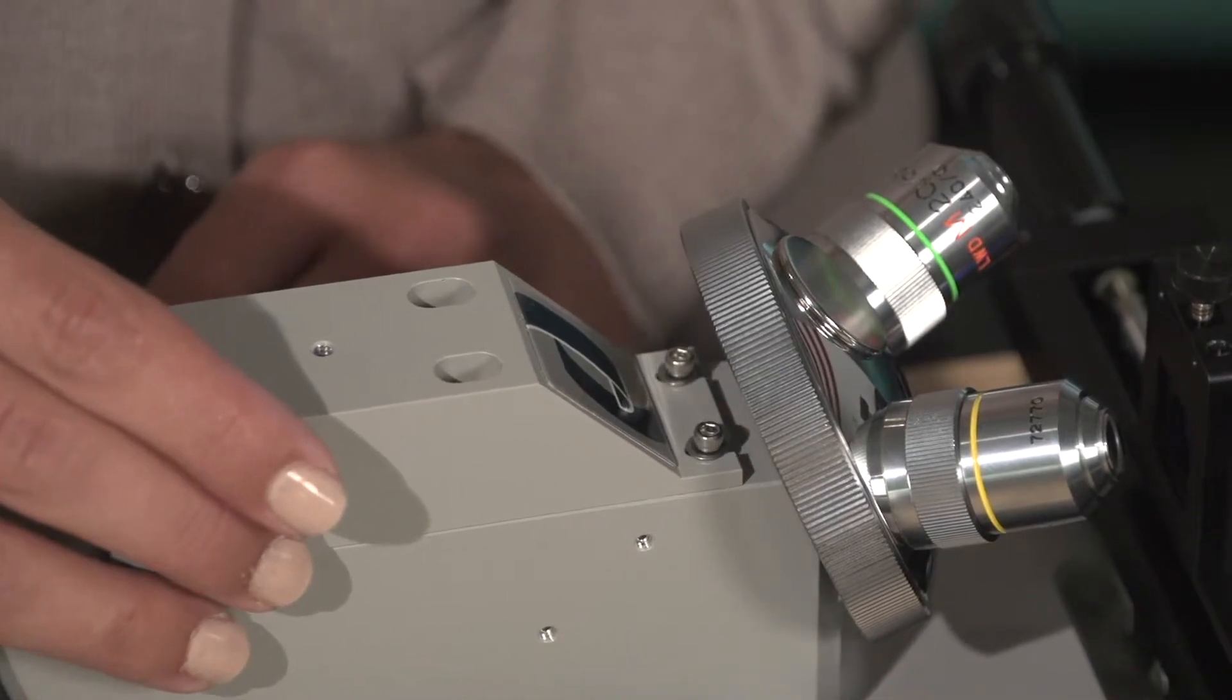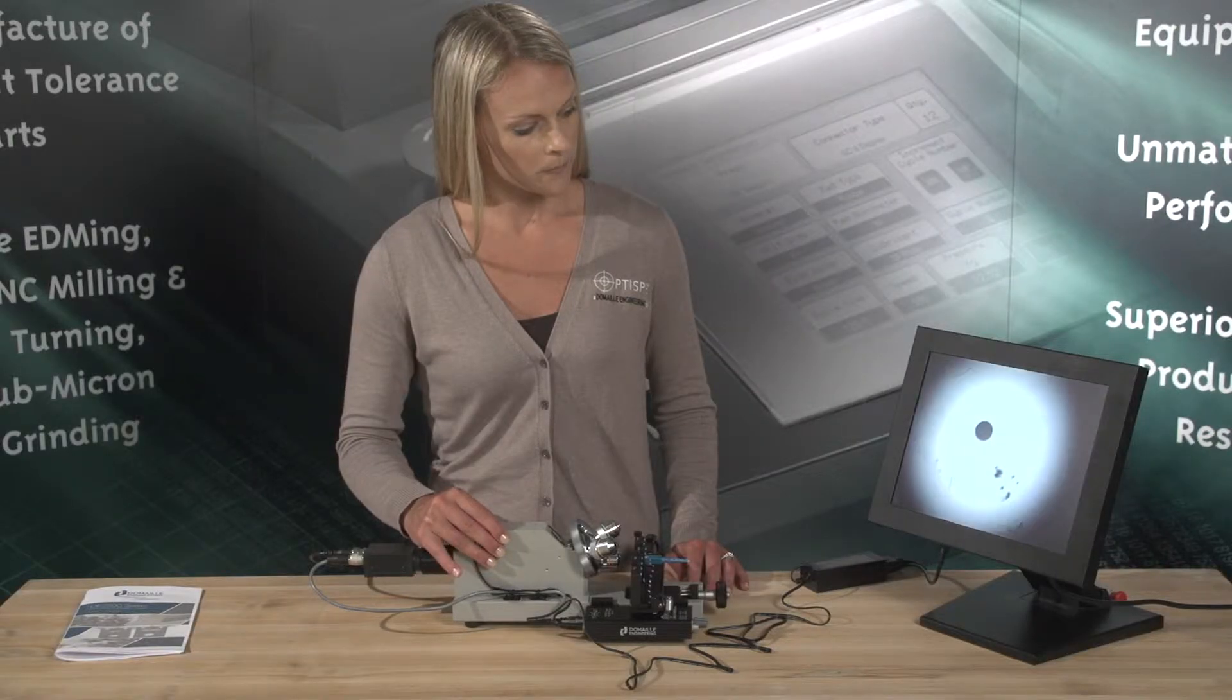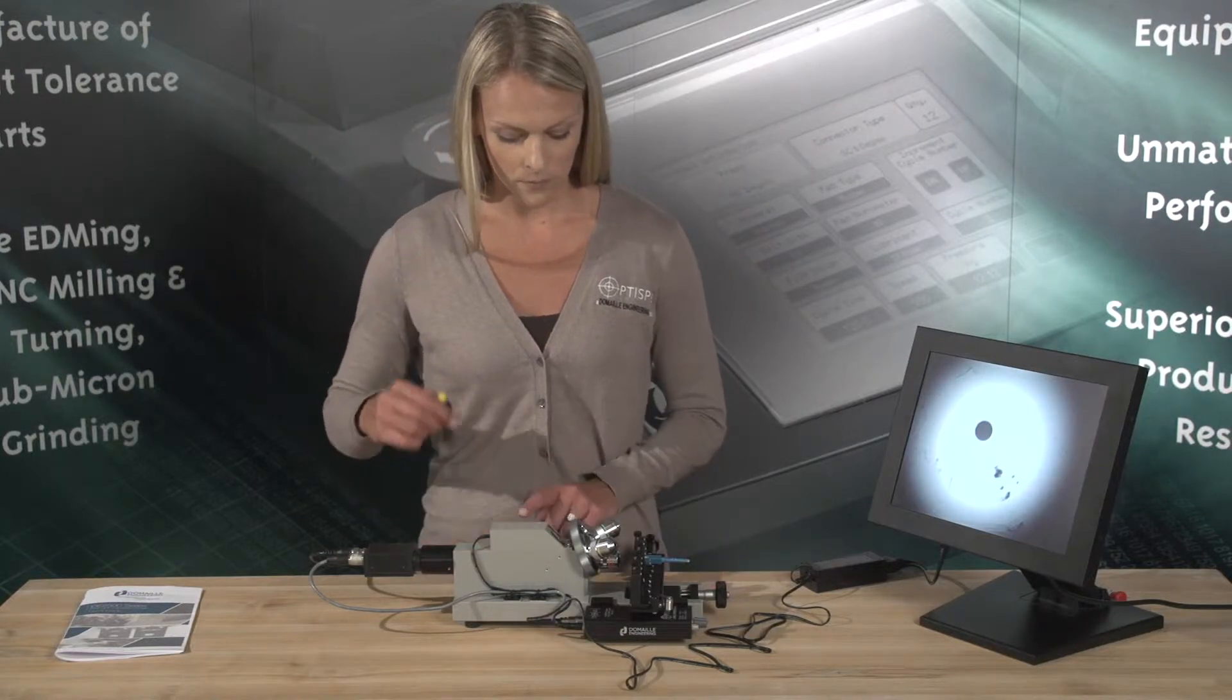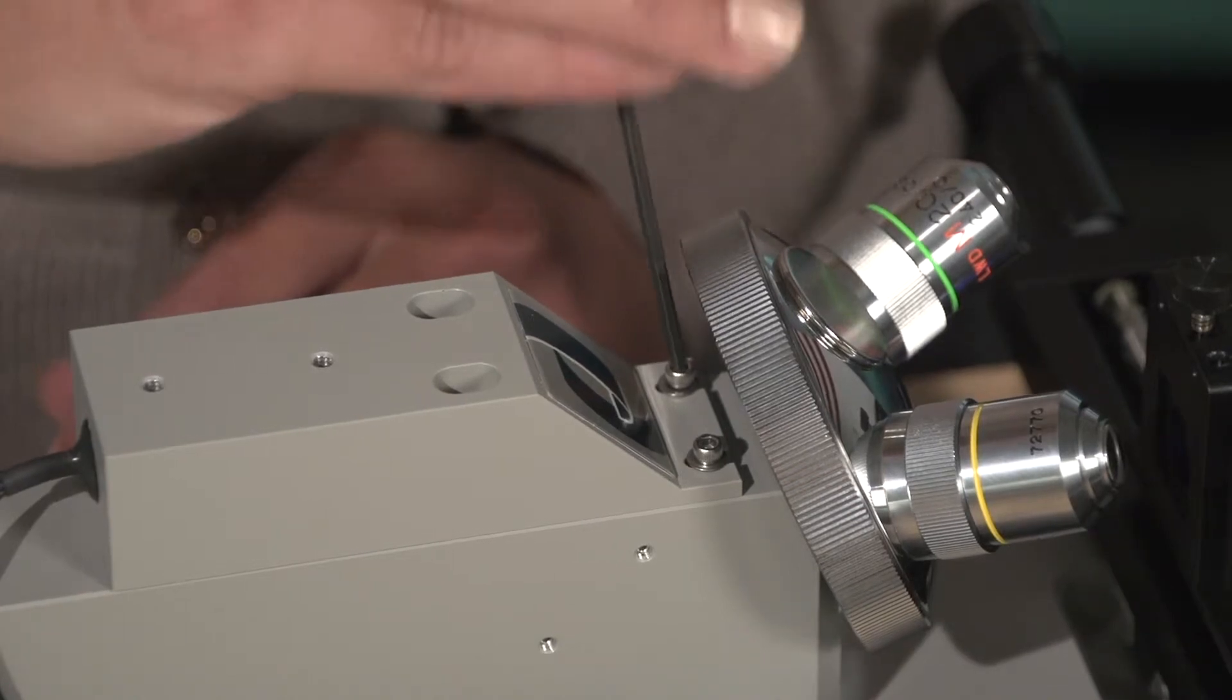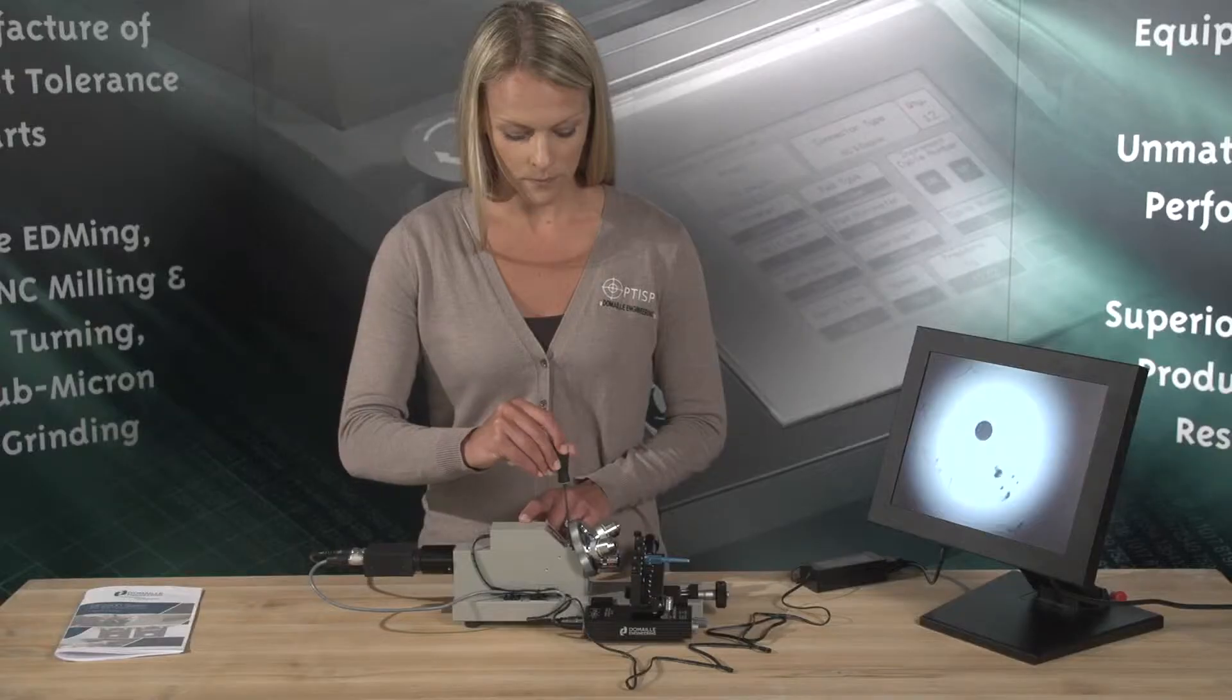Using a 3/32 inch hex wrench, loosen the four socket head screws holding the light block. While viewing a fiber on the monitor, slide the light block around until the greatest amount of light is centered over the fiber. Re-tighten the four screws.